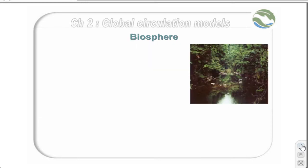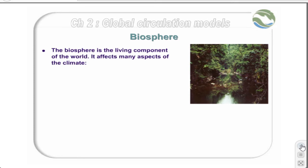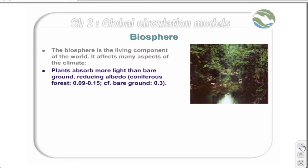The biosphere is the sum total of all life on the Earth. Whilst it clearly is a component of terrestrial processes, it is useful to consider it as a separate system. The biosphere affects the albedo of the planet's surface considerably. Bare ground, such as desert, has an albedo of 0.3, whilst coniferous forests are generally much lower, at 0.09 to 0.15, and consequently absorb far more solar radiation.